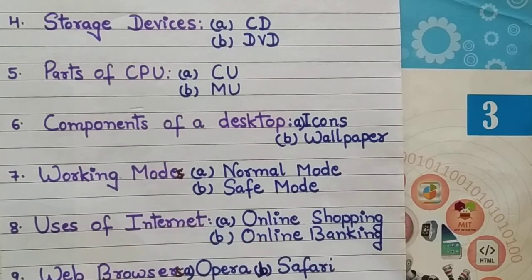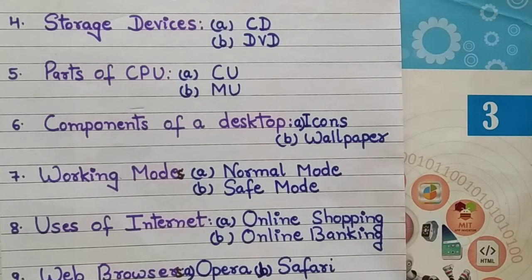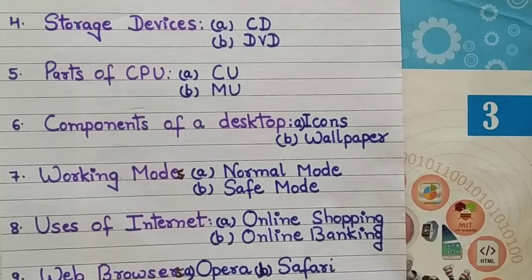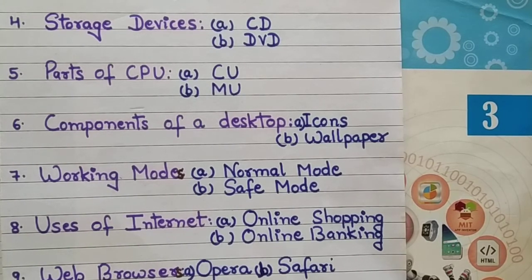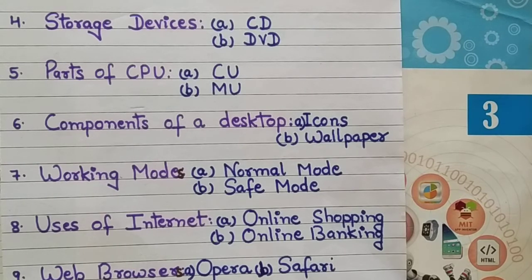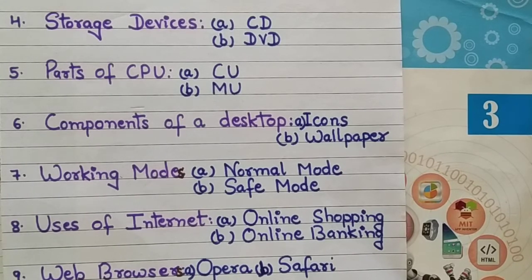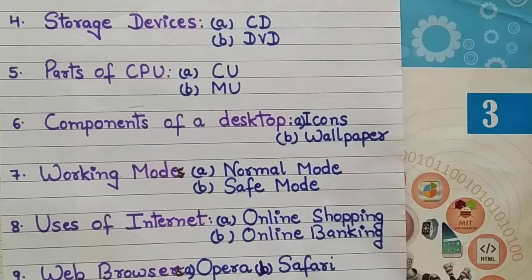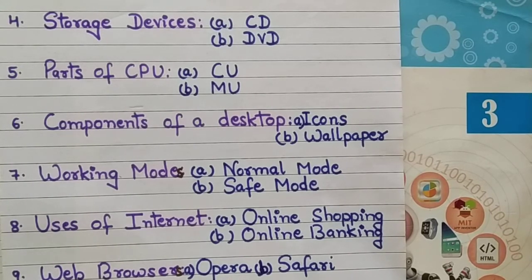Seventh, working modes. The computer works on various modes. The first is normal mode, where the computer starts directly. The second is safe mode. In safe mode, only the essential files related to the operating system are loaded, so we can install or repair the system when it is not working correctly.